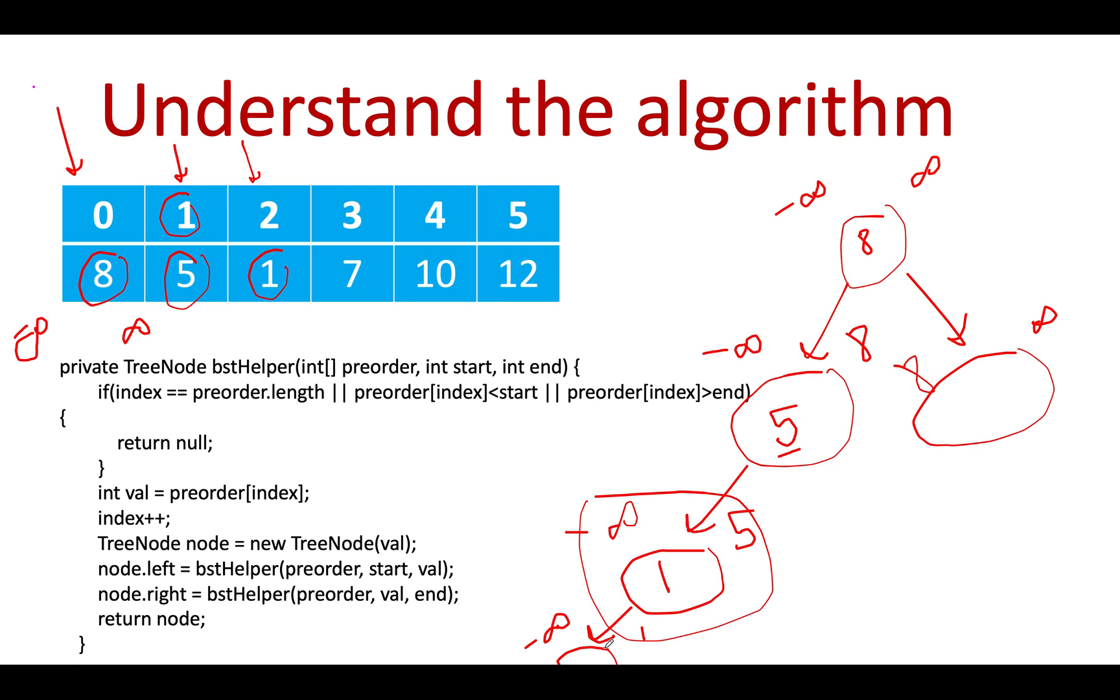The next entry we get is 7. Seven is out of bounds, that means we'll have to update the node to null because this is a misfit. For the right entry, the lower bound would be 1 and the higher bound would be 5. Seven doesn't lie in this range, so this gets updated to null.